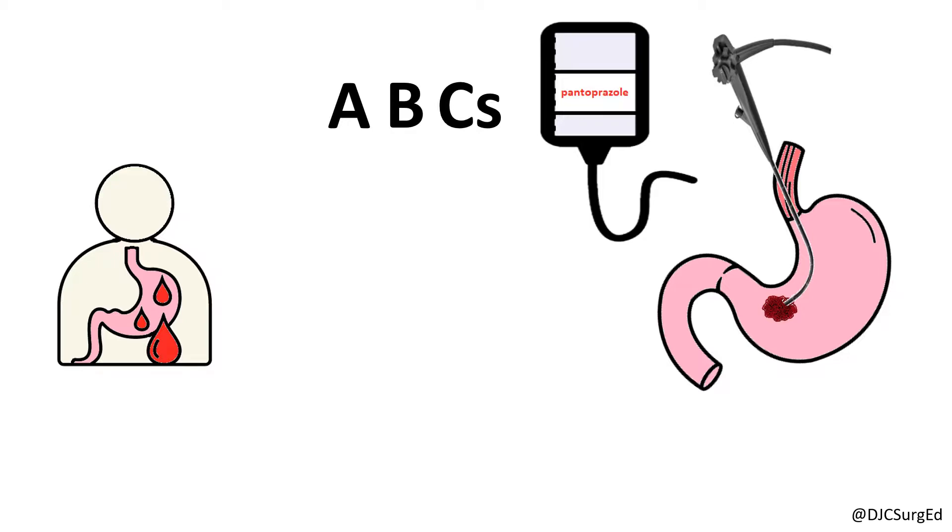Risk of re-bleeding is higher with the following findings: active bleeding, oozing, adherent clots, or visible vessel, whereas patients without active bleeding, no visible vessel, and a clean ulcer base are at lower risk.